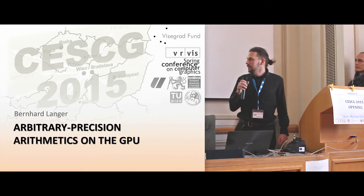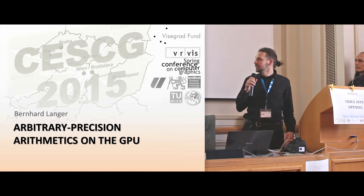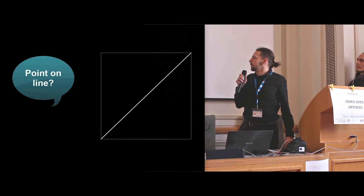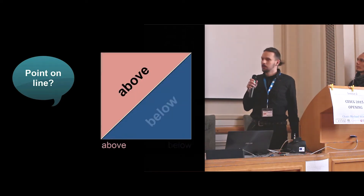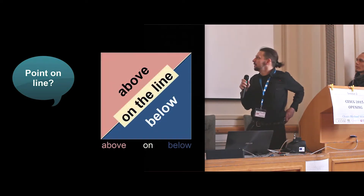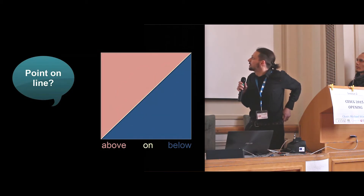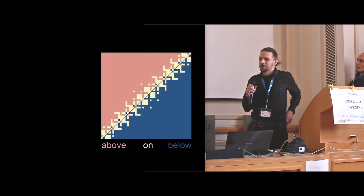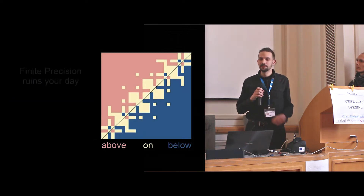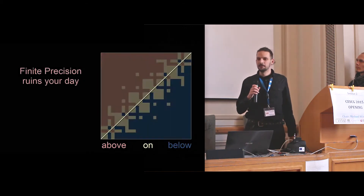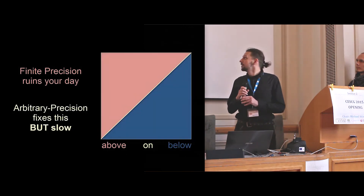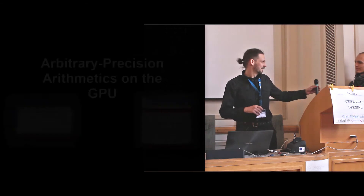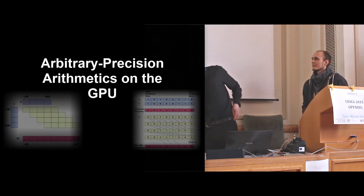An everyday question in computational geometry is whether a point lies on a line. A point can be above, below, or on the line. But let's take a closer look — what you can see here is the fixed precision problem. Arbitrary precision can fix this, but it is slow. So what can we do? Use the GPU, of course. Thank you very much.